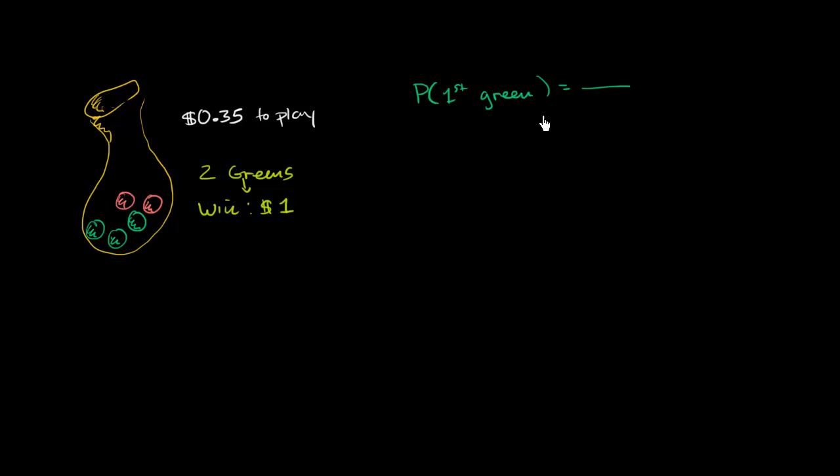Well, the total possible outcomes, there's five marbles here, all equally likely. So there's five possible outcomes. Three of them satisfy your event that the first is green. So there's a 3/5 probability that the first is green. So you have a 3/5 probability that after that first pick, you're kind of still in the game.